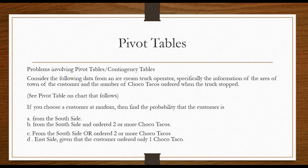Problems involving pivot tables and contingency tables. Let's say I love to talk ice cream and ice cream trucks, so let's consider the following data from an ice cream truck operator. Specifically the information of the area of town of the customer and the number of Choco Tacos ordered when the truck stopped.